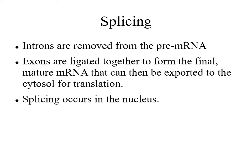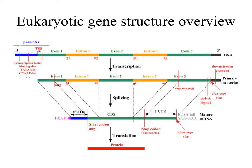Splicing involves removal of introns from the pre-mRNA and ligation of the exons together to form the final mature mRNA that is then exported to the cytosol. Splicing occurs in the nucleus. These pictures can be misleading — they make the intron look similar in size to the exons, but generally introns are much larger than exons. One thing to know is the GU-AG rule: the first two nucleotides of the intron are almost always GU and the last nucleotides are almost always AG in the RNA.